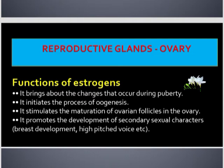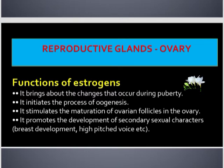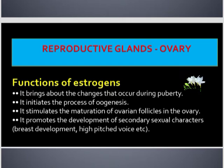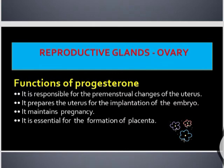Functions of estrogen: it brings about the changes that occur during puberty; it initiates the process of oogenesis; it stimulates the maturation of ovarian follicles in the ovary; it promotes the development of secondary sexual characters, that is breast development, high-pitched voice, etc.